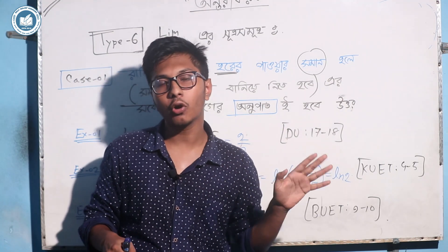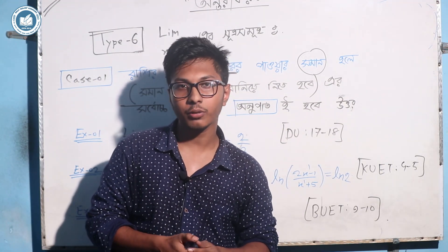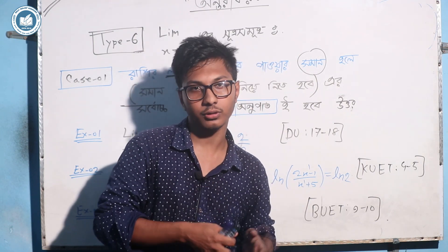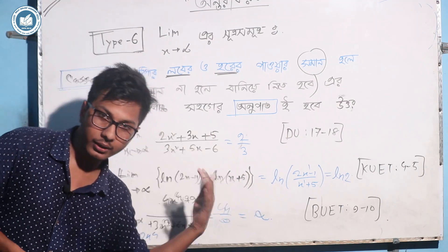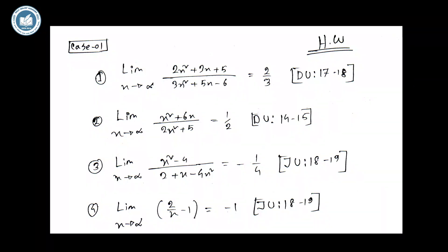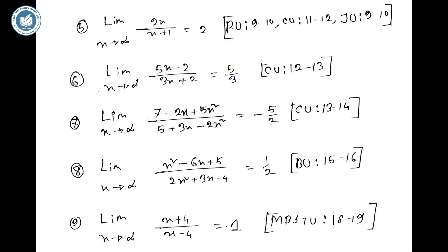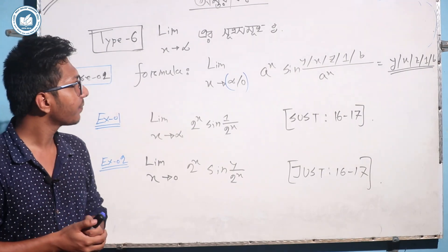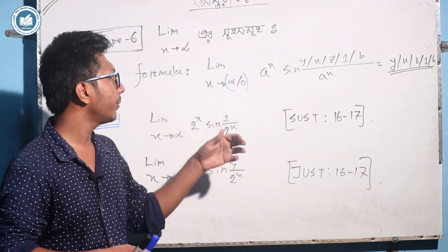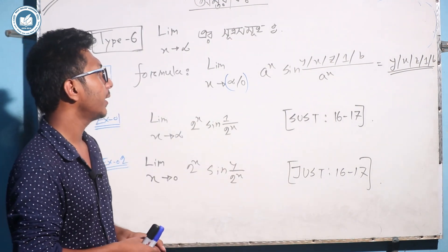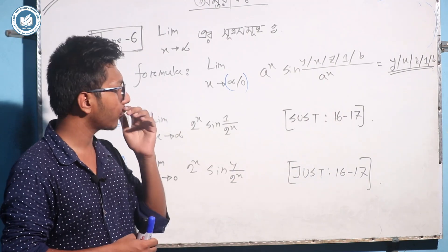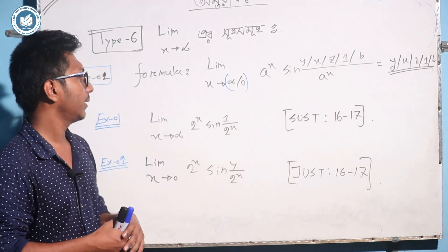You can write the answers. Then you will write the answers. Now you have to write them. Then I will write 3, and I have to write first. Now let's look at the next limit x to infinity and next vector structure. Then let's look at the case 2 vector structure. This is very important vector formula.